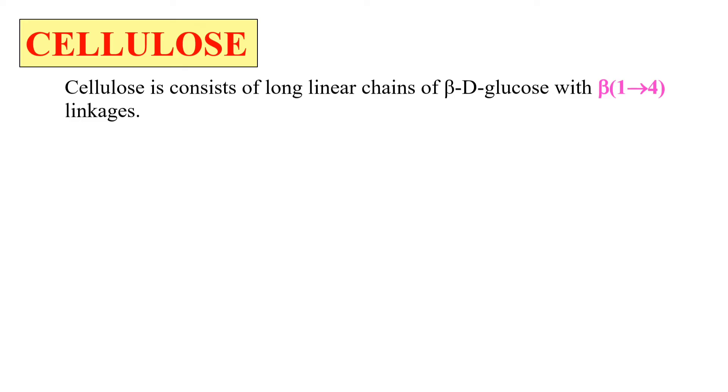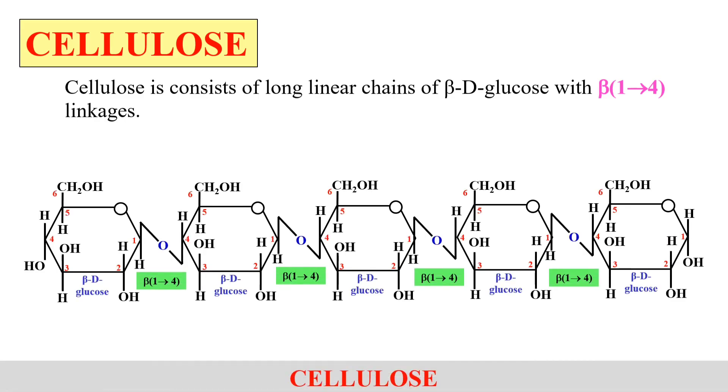Cellulose, as you know, forms a major part of the plant cell wall and it generally consists of very long linear chains of beta-D-glucose which are linked with beta-1,4 linkages. As this is the structure of cellulose in which these are the beta-D-glucose molecules linked with each other by these beta-1,4 linkages. So, cellulose consists of beta-D-glucose linked with each other by beta-1,4 linkages.